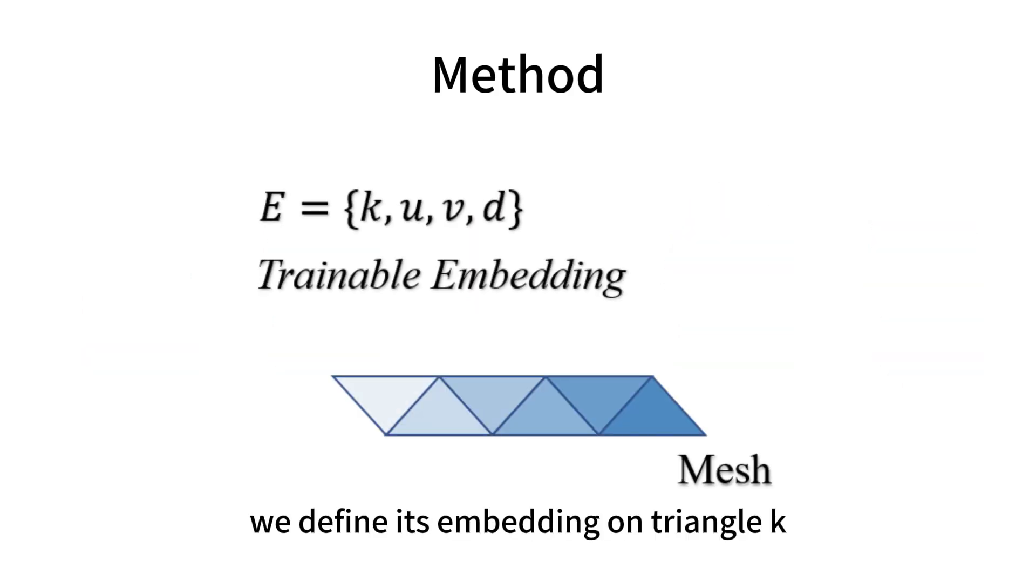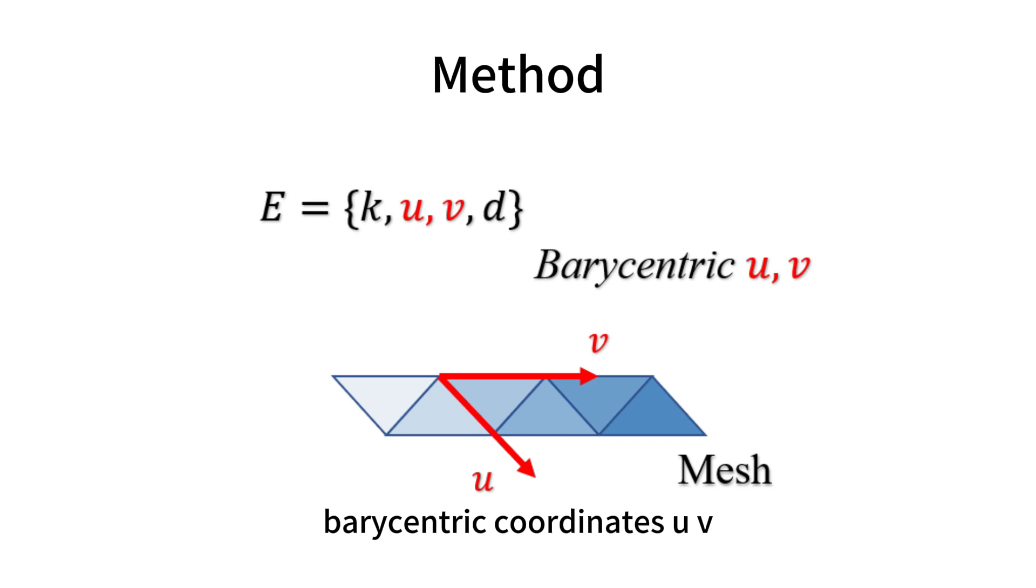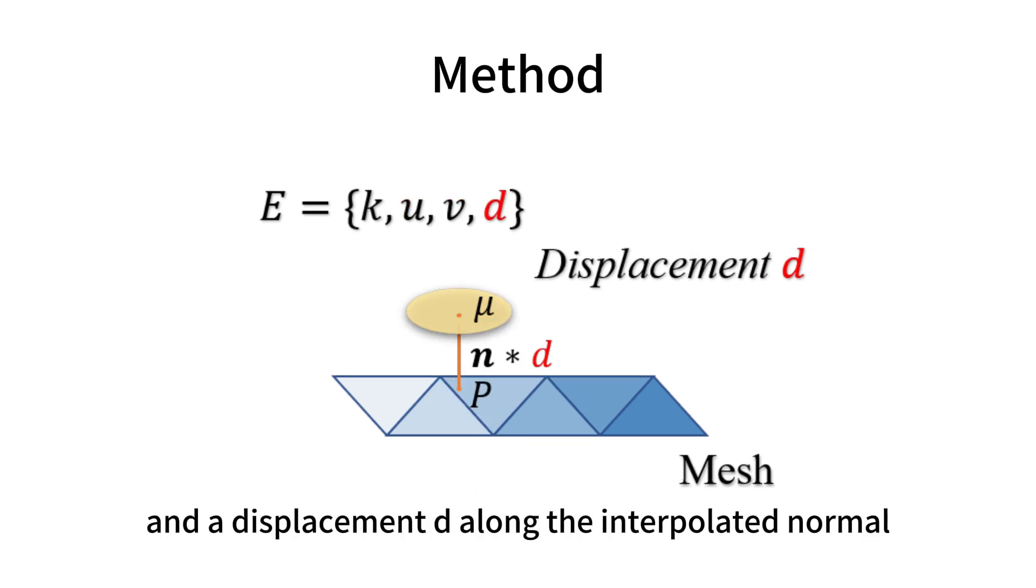For each Gaussian, we define its embedding on triangle K, barycentric coordinates UV, and a displacement D along the interpolated normal.